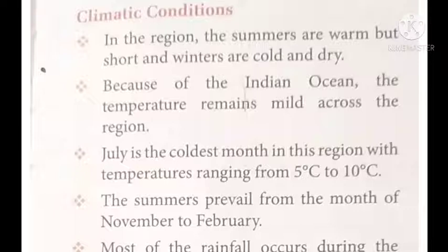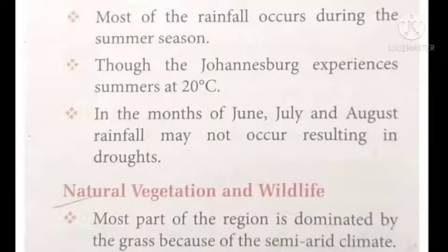The summers prevail from the month of November to February. Most of the rainfall occurs during the summer season. Johannesburg experiences summer temperatures of around 20 degrees Celsius.